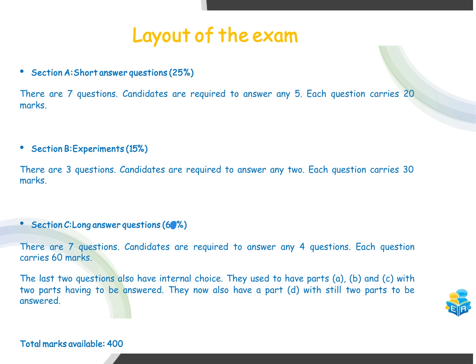Section C is worth 60% of your final grade. There are seven questions here, similar to the short questions, and you're only required to answer four. Each question carries 60 marks. The last two questions have internal choice — questions 16 and 17 will have parts A, B, C, and D. If you choose to answer either or both of those questions, you only have to answer two parts. Your best two parts in those particular questions will count, since each part is worth 30 marks, but in total each long question is worth 60, giving a total marks available of 400.